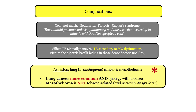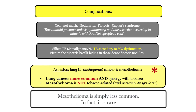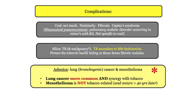Mesothelioma has the more characteristic tumor association, but it is considerably more rare. You should be aware that tobacco is not a risk factor for mesothelioma, and the latency between asbestos exposure and mesothelioma is lengthy, being in excess of 40 years.